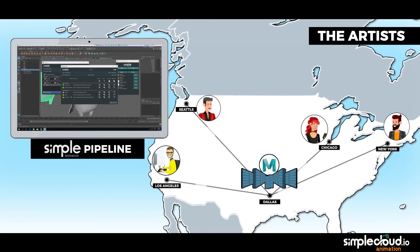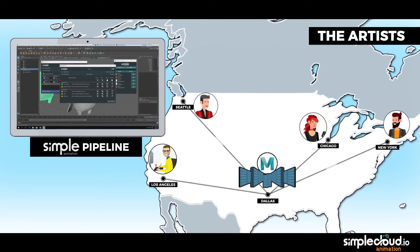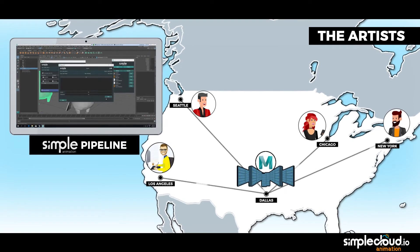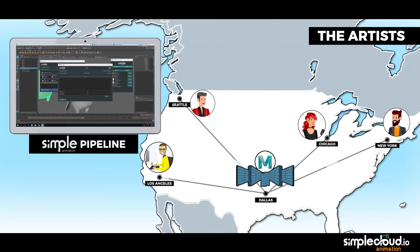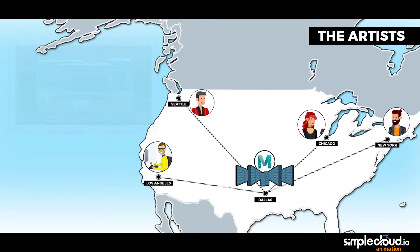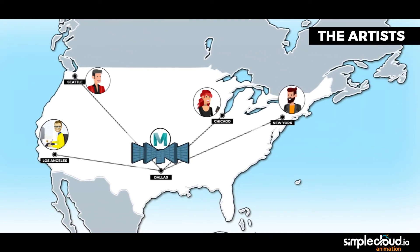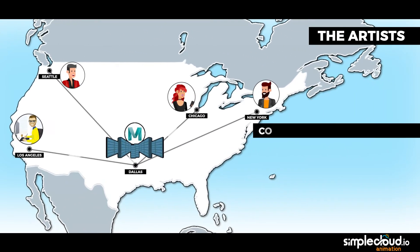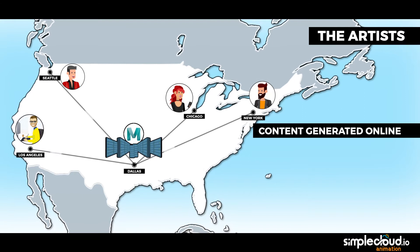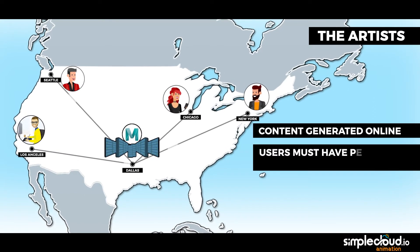Thanks to Simple's pipeline and Shotgun integration, each member knows at all times what they need to do every day. John can see a daily update of what has been done. As content is generated online, it is kept online.